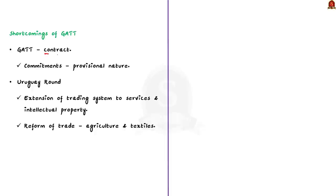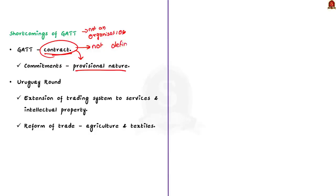GATT was a contract to which countries were parties — it is not an organization in which countries are members. In a contractual agreement, commitments were applied on a provisional rather than definitive basis. This only necessitated the formation of an organization. Apart from this, the last round of GATT — the Uruguay Round — also necessitated the formation of an organization. The talks were to extend the trading system into several new areas, for example trade in services and intellectual property, and to reform trade in the sensitive sectors of agriculture and textiles.